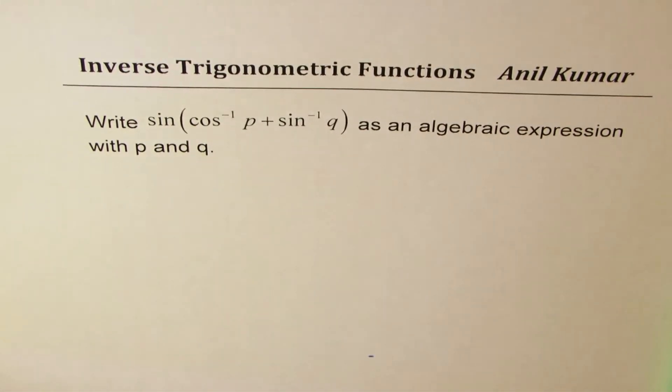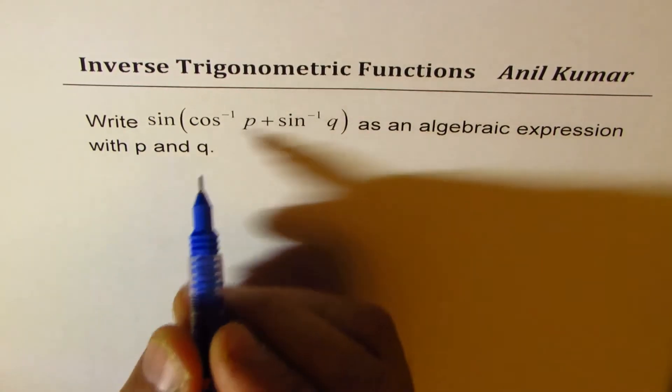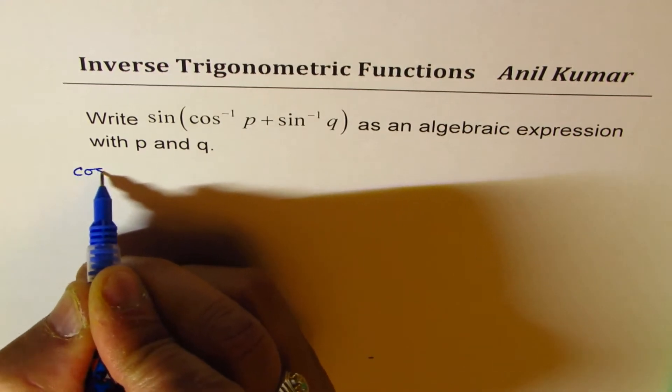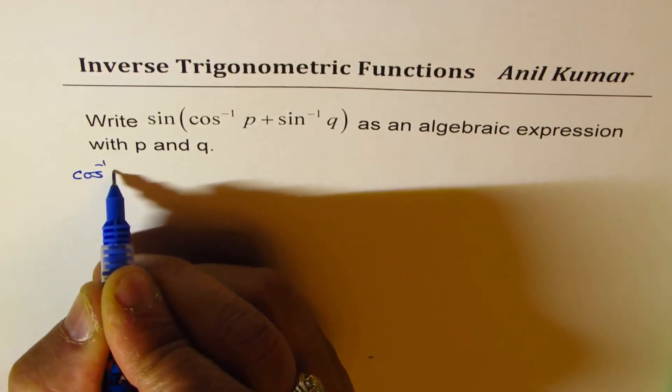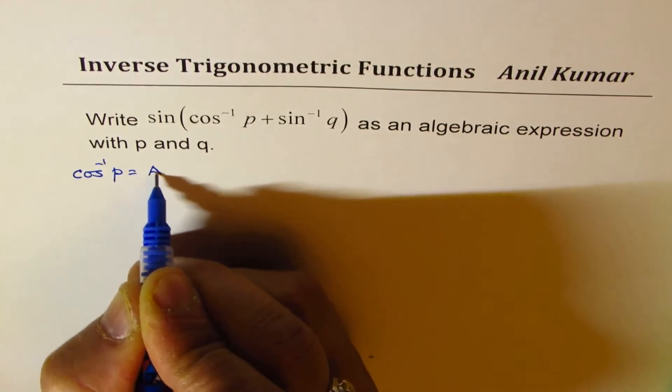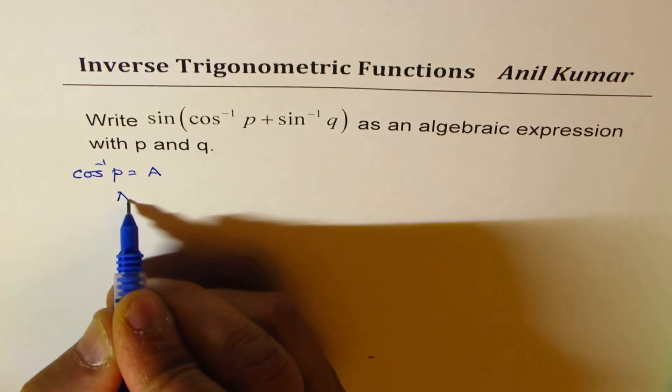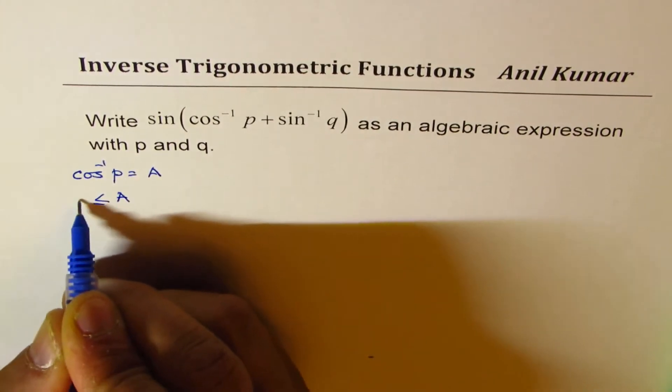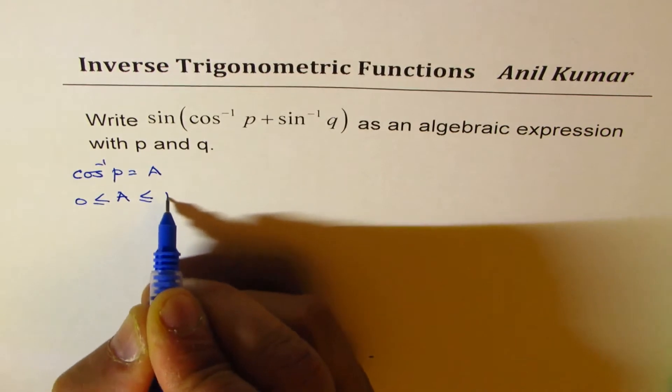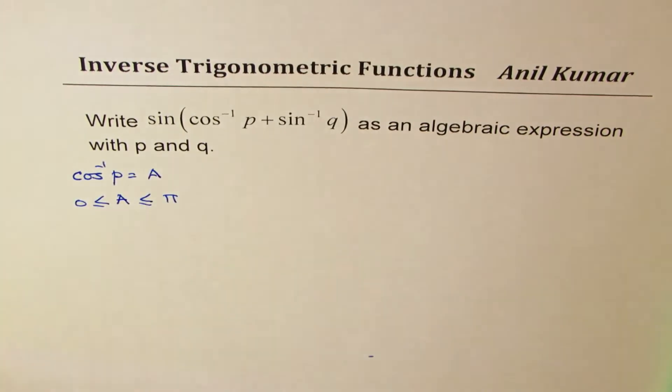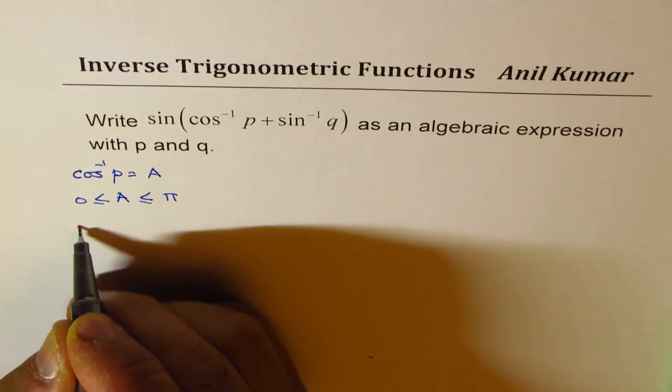There are a few concepts which I would like to make clear before we move forward. Let us assume that cos⁻¹p is equal to A. In that case, angle A should be between 0 and π. Only in this interval can we have inverse of cos as a function.